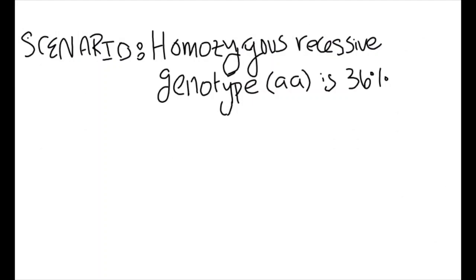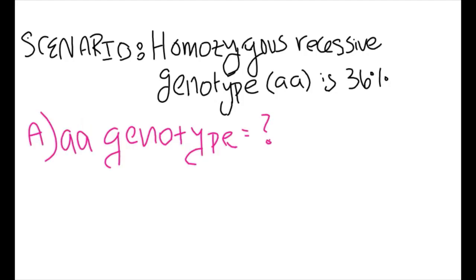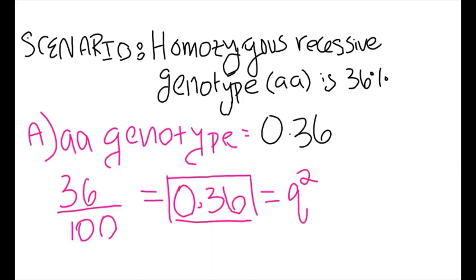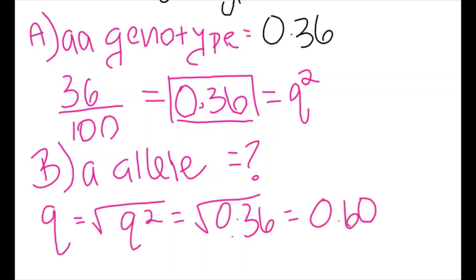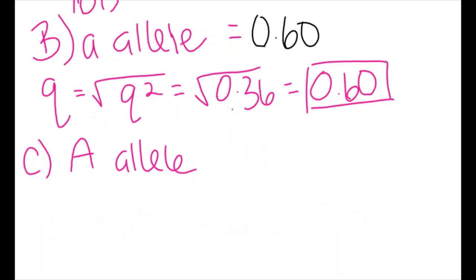Let's say we are given a scenario in which we sample a population, and the percentage of homozygous recessive genotype is 36%. The first part of our question asks us to find the frequency of the recessive genotype. Since percentage is represented by that number over 100, 36% is the same as 0.36, and that's the frequency of our recessive genotype, or Q squared. In part B, we are asked to find the frequency of the recessive allele. Since Q by itself represents the recessive allele frequency, taking the square root of Q squared gives us 0.60.